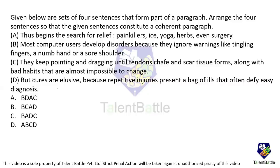The first thing to do while answering a para-jumble question is option elimination. If you observe, options A, B, and C all start with statement B, whereas option D starts with statement A. Checking option D — 'Thus begins the search for relief' — this cannot be the start because we don't know what 'this relief' refers to. So option D can be eliminated.